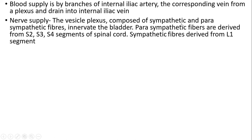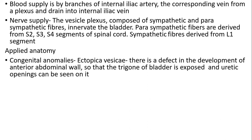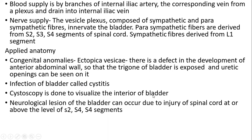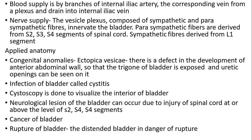Nerve supply: vesical plexus is composed of sympathetic and parasympathetic fibers which innervate the bladder. Parasympathetic fibers are from S2, S3, S4 segments of the spinal cord. Sympathetic fibers arise from lumbar segments. Applied anatomy: congenital anomaly — ectopia vesicae: there is deficiency in the development of the anterior abdominal wall, the trigone of the bladder is exposed and ureteric openings can be seen on it. Infection of the bladder causes cystitis. Cystoscopy is done to visualize the interior of the bladder. Neurological lesions of the bladder can occur due to injury of the spinal cord at or above S2–S4 segments. Rupture of the bladder can also occur.